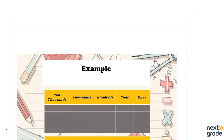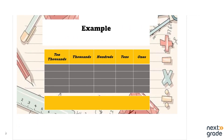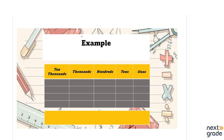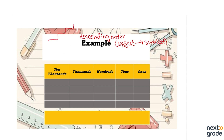Now let's move to the next slide where we will solve a question using descending order. Remember, descending order means from biggest to smallest — the biggest number comes first, then smaller, then the smallest. Think of it like stairs: descending means you are coming down the stairs, and ascending means you are going up.